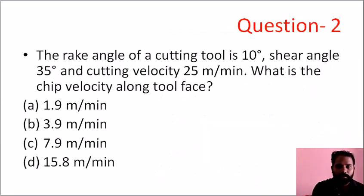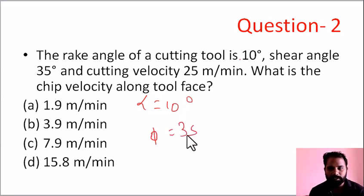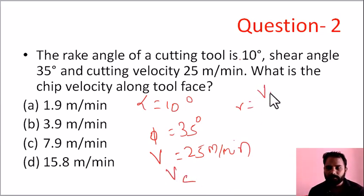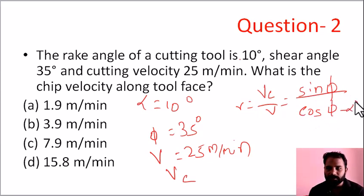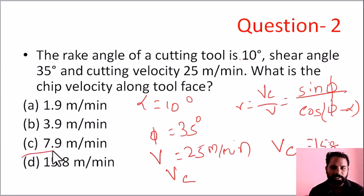Next question: Find chip velocity Vc given rake angle alpha equals 10 degrees, shear angle phi equals 35 degrees, cutting velocity V equals 25 meters per minute. Using r equals Vc divided by V equals sin phi divided by cos(phi minus alpha): Vc equals 25 times sin 35 divided by cos(35 minus 10). Solving this gives Vc approximately equal to 15.8 meters per minute. Option D is the correct answer.